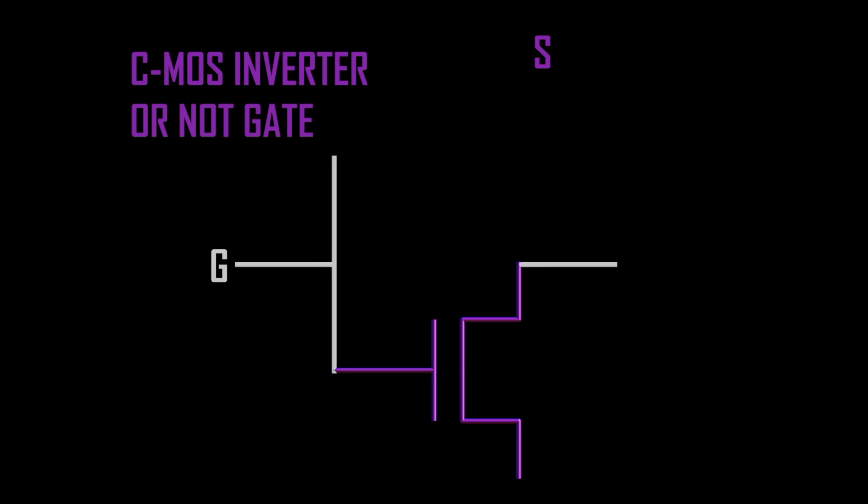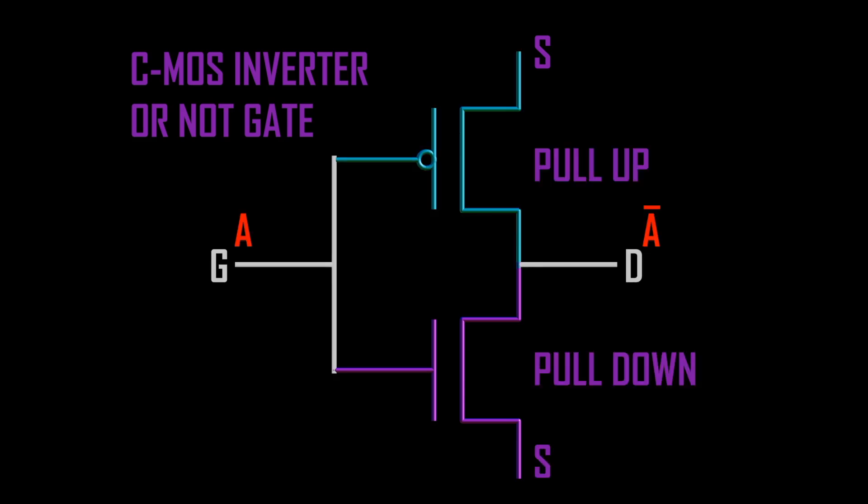Since one MOSFET acts as a pull-up and the other as a pull-down transistor, this inverter is also called a NOT gate. A is inverted.